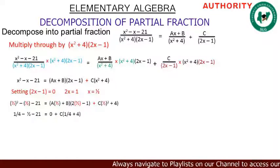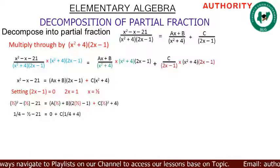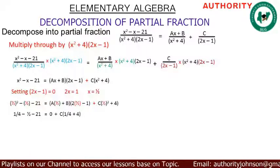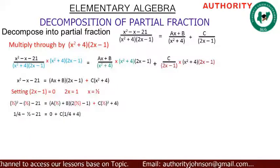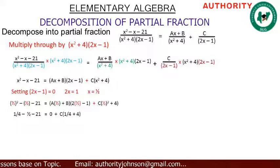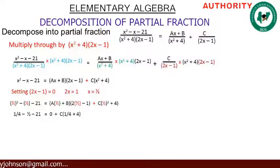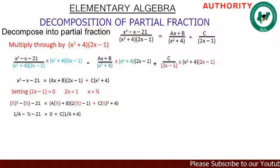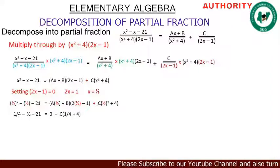We have 1/4 minus 1/2 minus 21. On the a side, 2 times 1/2 equals 1, and 1 minus 1 is 0, so 0 times the bracket equals 0. For c, (1/2) squared is 1/4, so 1/4 plus 4 gives 17/4. So we have 1/4 minus 1/2 minus 21 equals 0 plus c times (1/4 plus 4), which is 17c over 4.